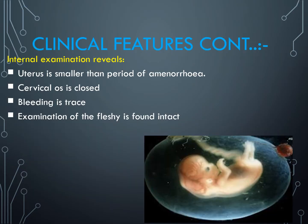When a woman with such history comes to us and we perform internal examination for confirming the diagnosis, the significant findings are: the uterus is smaller than the period of amenorrhea — for instance, if the woman is pregnant for 12 weeks, the uterus will be much smaller than 12 weeks. The cervical os will be closed, not admitting any fingers. Bleeding will be very less. When you examine the fleshy mass, you will find it is intact — the baby along with amniotic fluid, amniotic sac, and placenta are all inside the sac. Nothing is left behind.